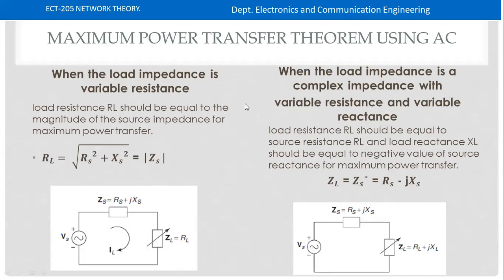There are three conditions related to load impedance for the Maximum Power Transfer theorem. The first condition: the load impedance is a variable resistance. The load impedance should be equal to the magnitude of the source impedance.